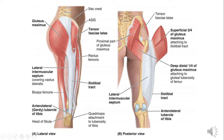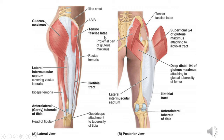Tensor fascia lata takes its origin from the anterior part of the iliac crest outer lip and inserts onto the iliotibial tract, which in turn inserts on Gerdy's tubercle. It assists gluteus maximus in tightening the fascia lata to support the thigh laterally. It also helps gluteus medius and minimus in abducting the thigh and is a medial rotator of the thigh. The key difference is that because its fibers are pushed anteriorly, it causes flexion at the hip joint — the only gluteal muscle to do so.